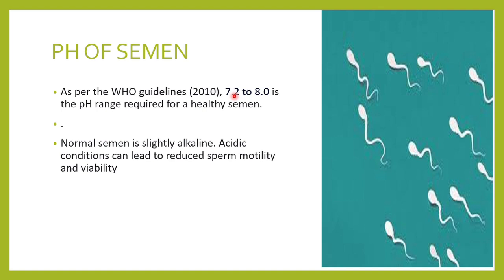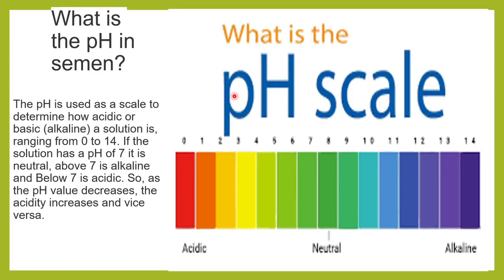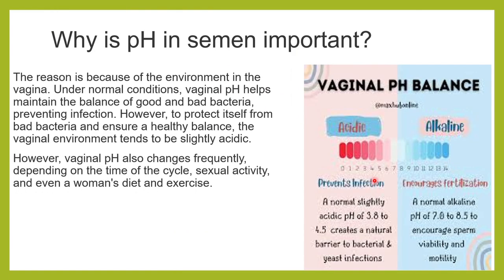Whenever the semen pH becomes acidic, it will affect sperm motility and viability — that is the importance of seminal pH. The pH scale is used to see how acidic or alkaline a solution is. The range is 0 to 14; around 7 is neutral, less than 7 is acidic, and more than 7 is alkaline.